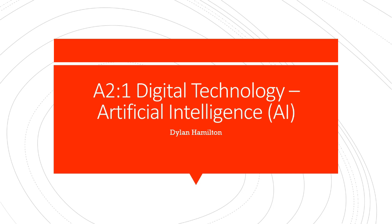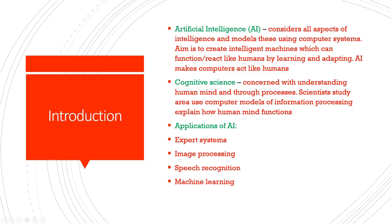Our first topic is going to be artificial intelligence, and this is going to be quite interesting. Artificial intelligence, always known as A.I. — and I will refer to it as A.I. throughout the video — is something that considers all aspects of intelligence and then models these using computer systems. The aim of A.I. is to create an intelligent machine which can function and react like a human by learning and adapting. A.I. makes computers act like humans.